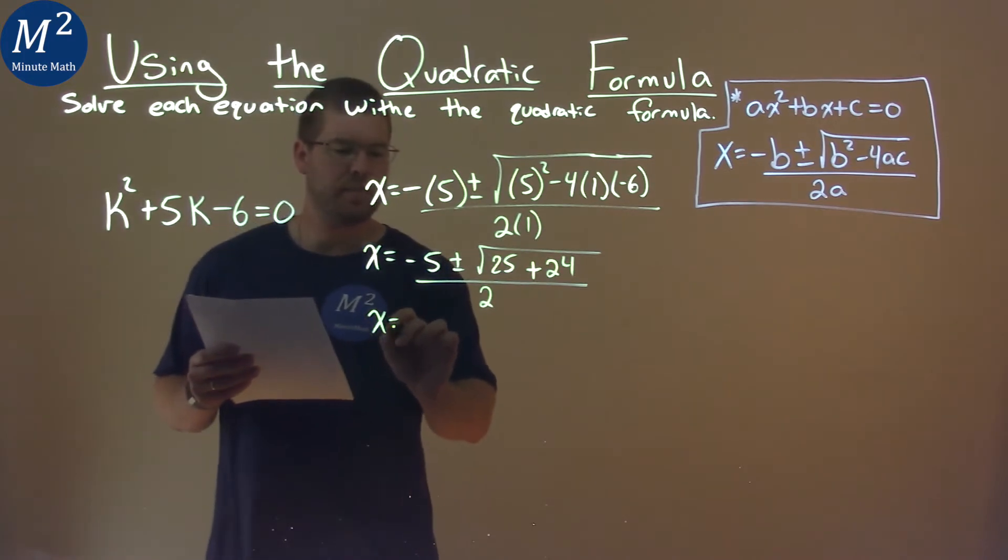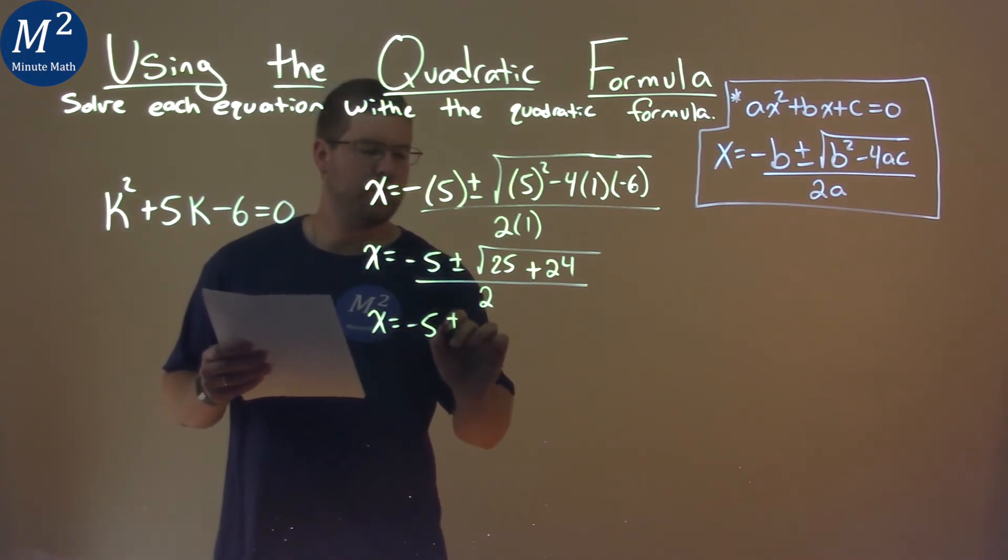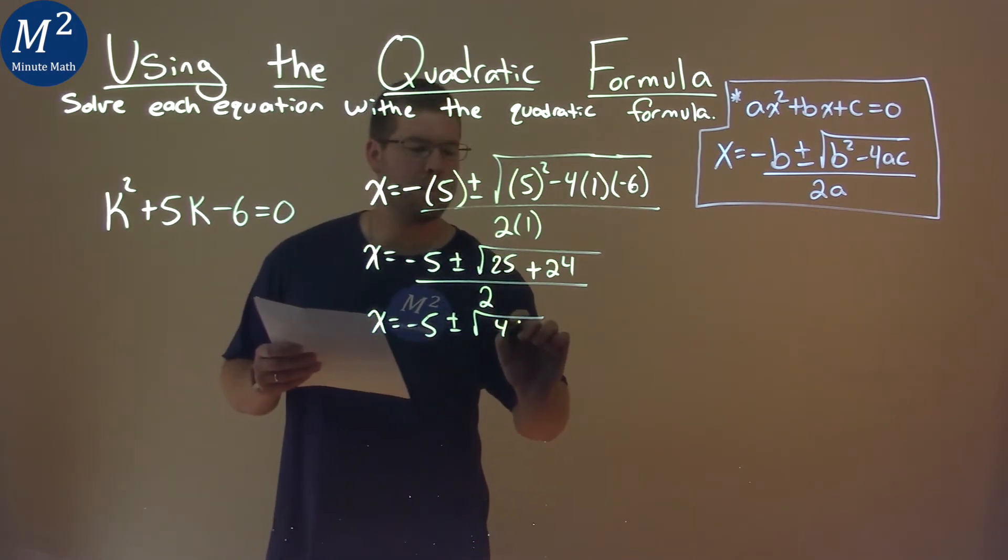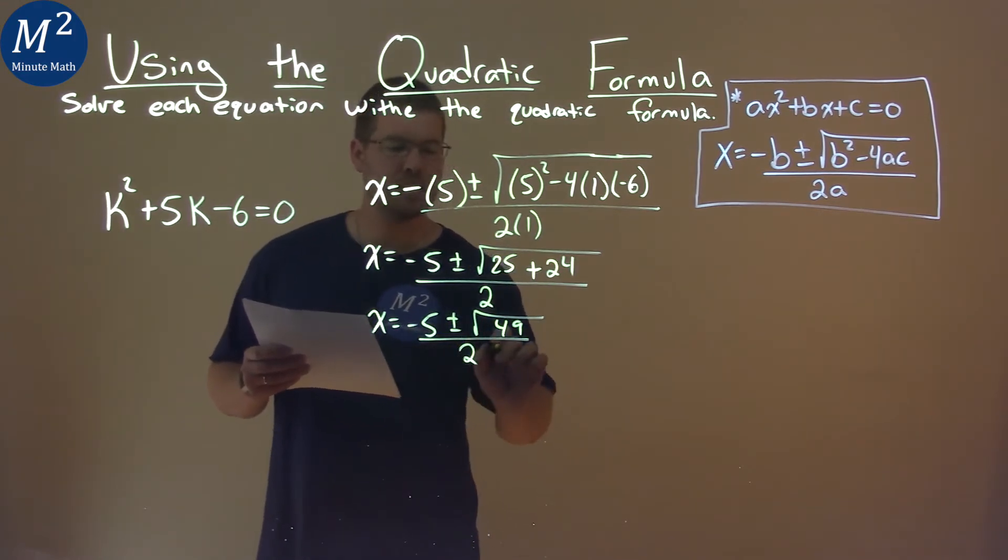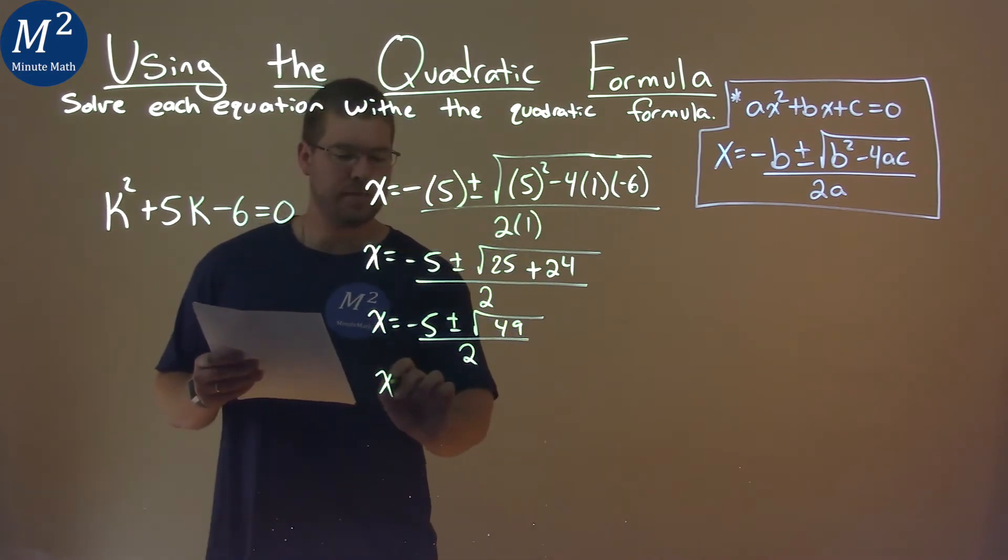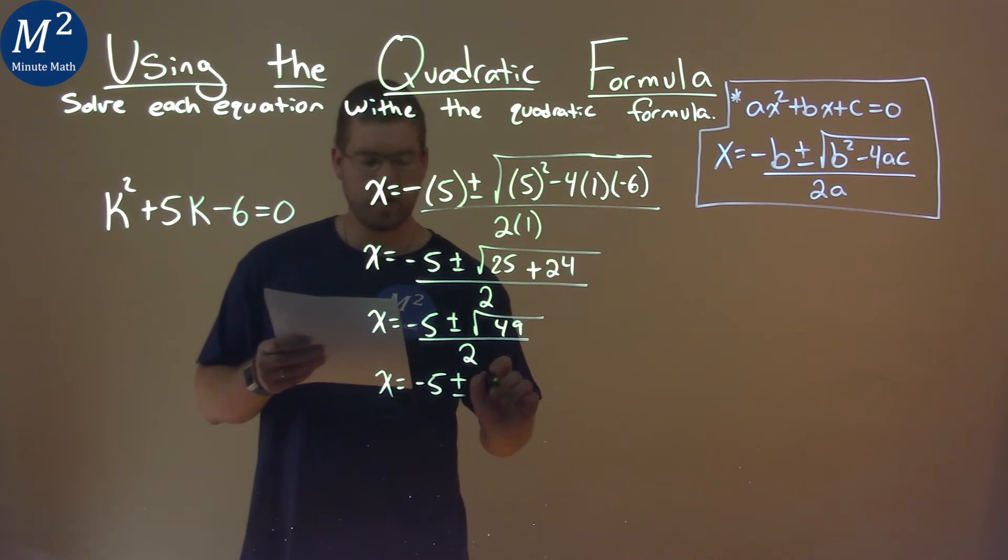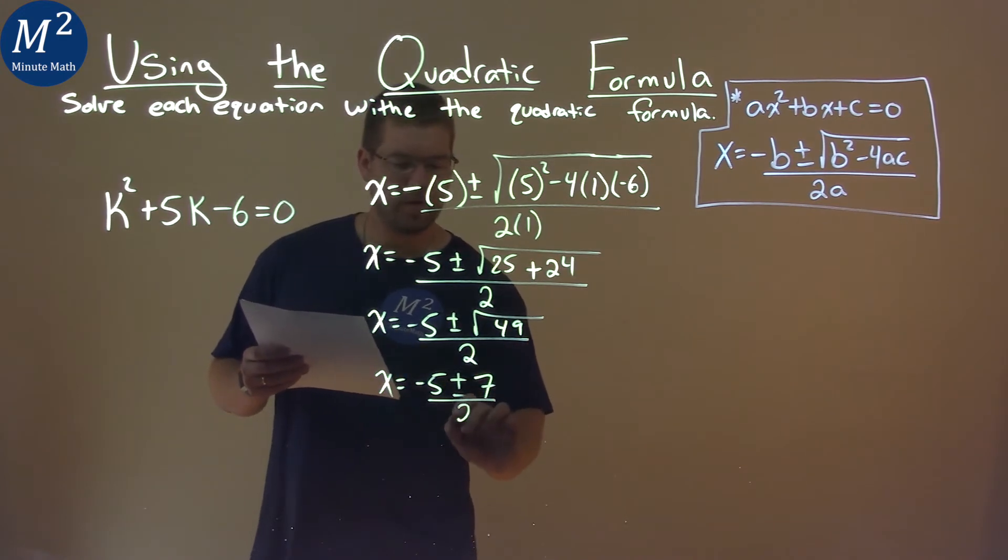Keep going. x equals negative 5 plus or minus - inside the square root we can add, and that's 49, all over 2. Square root of 49, we can do that next. So negative 5 plus or minus square root of 49, which is 7, over 2.